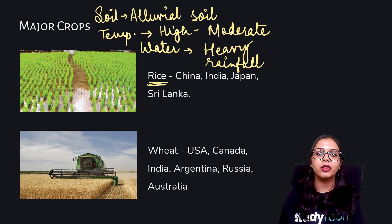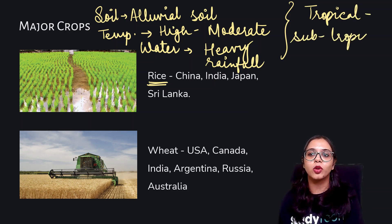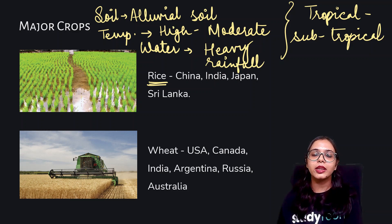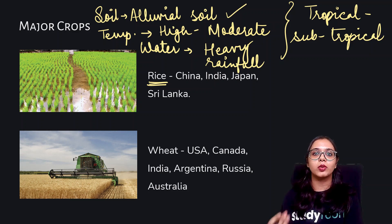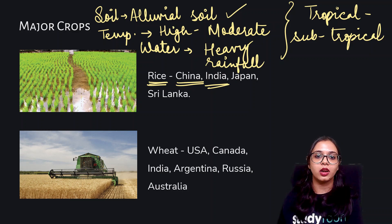Can you recall an area where there is moderate to high temperature and heavy rainfall? It is actually the tropical areas — and not just tropical, but also subtropical regions — which have high to moderate temperatures and adequate to heavy rainfall. Since rice or paddy needs a lot of water, an area with moderate to heavy rainfall is preferred. Alluvial soil is found in the northernmost part of India, in the plains, so rice is cultivated in large quantities there. China is the leading producer of rice, followed by India, Japan, Sri Lanka — mostly Asian countries.